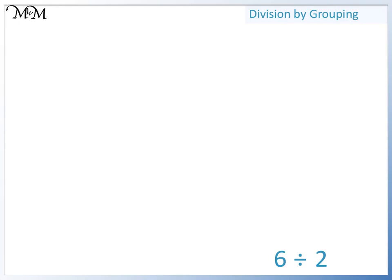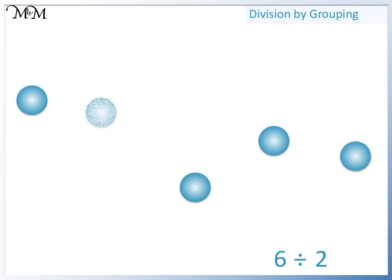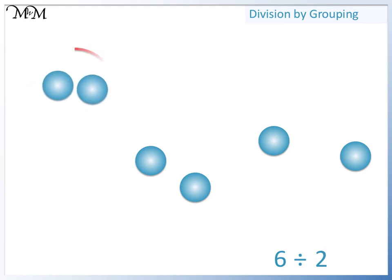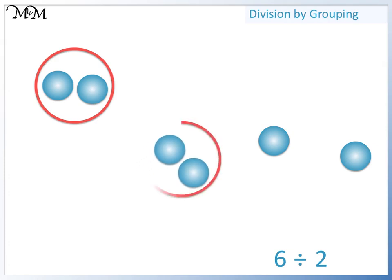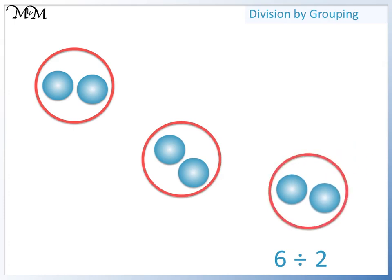Finally, here we have 6 divided by 2. So here are 6 counters. We are dividing by 2, so we will divide the counters into groups of 2. Here is 1 group of 2, 2 groups of 2, 3 groups of 2. There are 3 groups all together, so 6 divided by 2 equals 3.